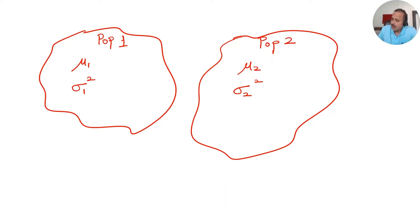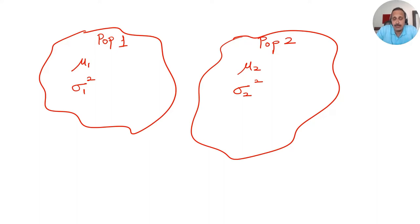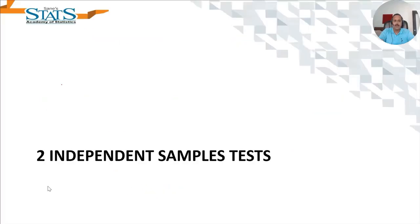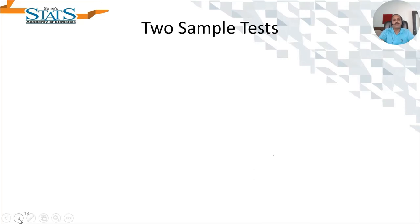Now if we want to say that the two populations are the same, or that the characteristics of two populations are the same, we mean to prove that sigma one squared is equal to sigma two squared, and mu one is equal to mu two. So we will have two hypothesis tests: one for proving whether sigma one squared equals sigma two squared, and another for proving whether mu one equals mu two.